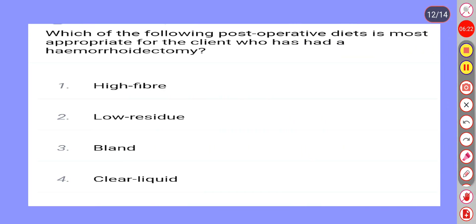Next question. Which of the following postoperative diets is most appropriate for a client who has had a hemicolectomy? Option 1: High fiber. Option 2: Low residue. Option 3: Bland. Option 4: Clear liquid. Correct answer is Option 4: Clear liquid.